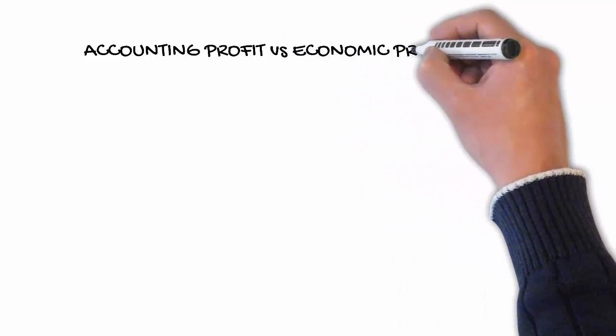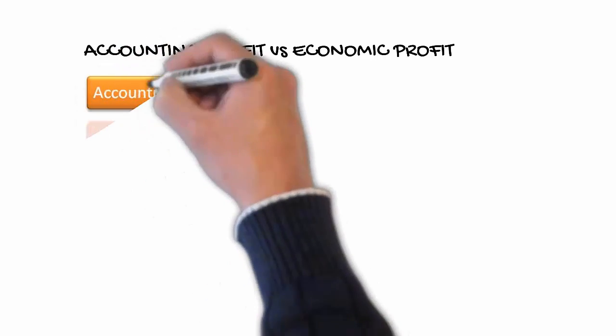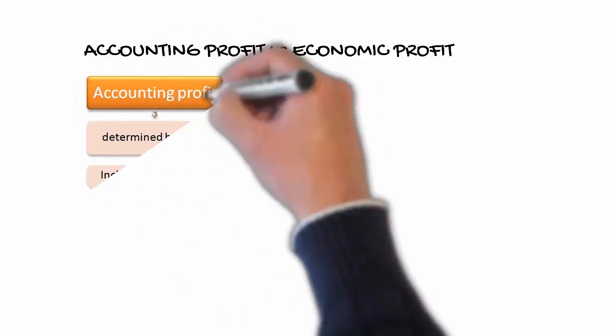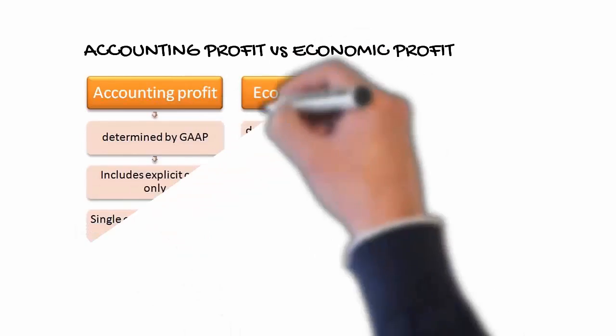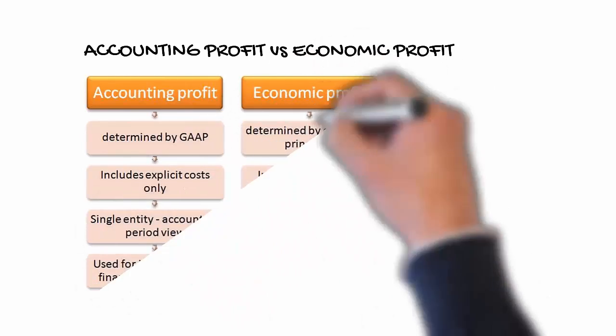Accounting profit is calculated by the rules and regulations set by generally accepted accounting principles. But economic profit is calculated with the help of economic rules and procedures.